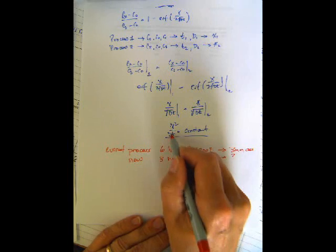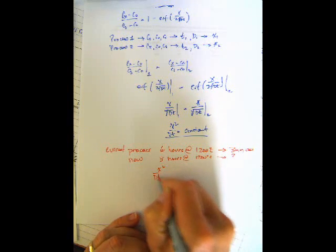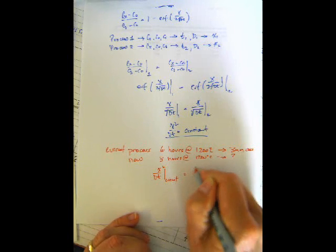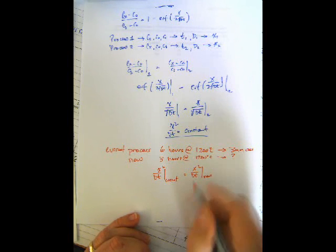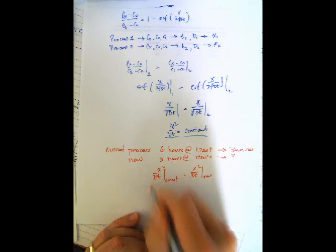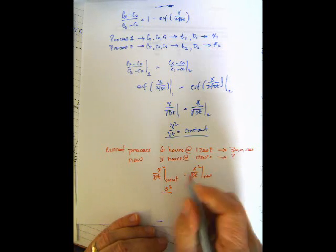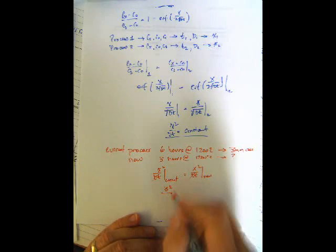Well, we're not changing temperature, so my D is a constant. So, what I have is x squared over dt for my current process has to equal x squared over dt for my new process. Well, obviously the D's cancel, they're going to be the same. So, I end up with 3 squared, which is my current depth. Okay?